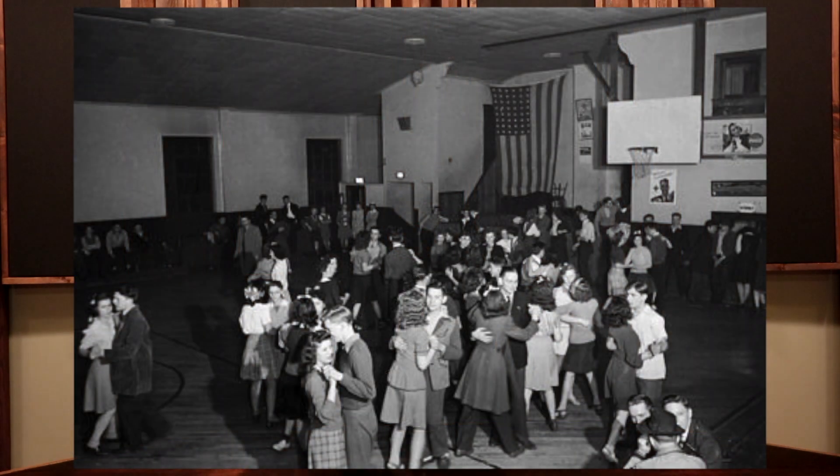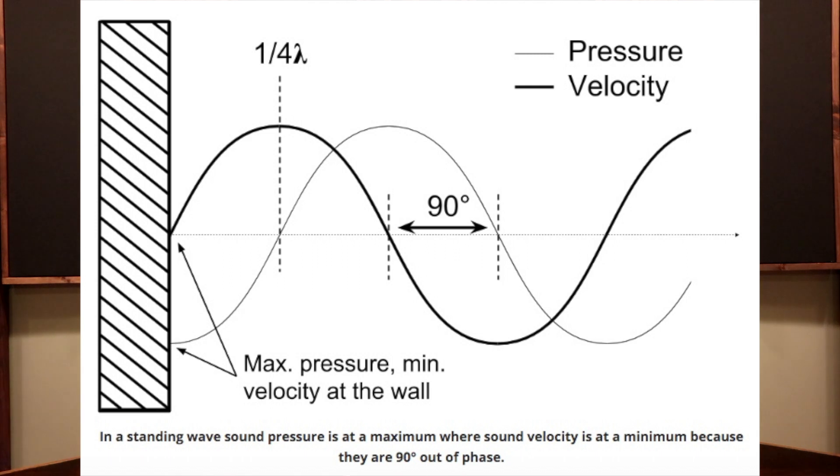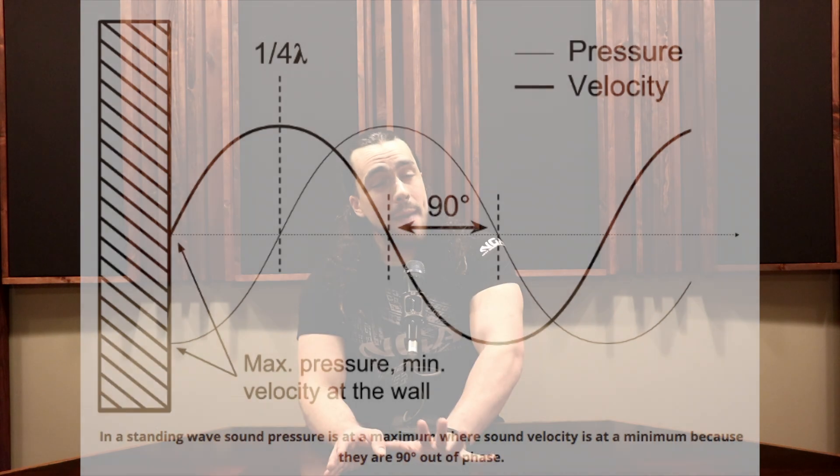Why is that? As you go out towards the center of the floor, you start to hear more of a balanced frequency from the music or sound system playing. That's because you're getting that bass buildup happening in the corners. So whenever you put a panel in the corner, that helps reduce that effect.